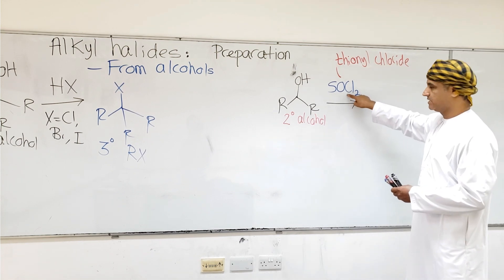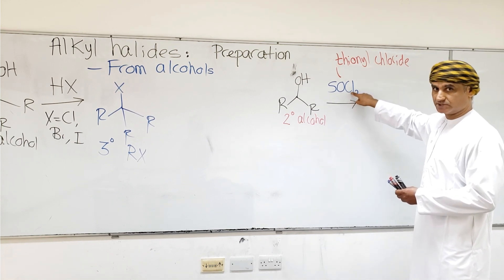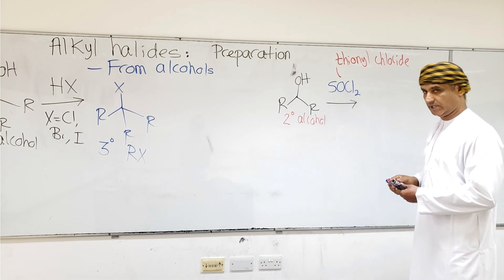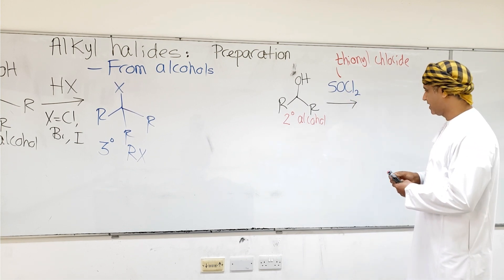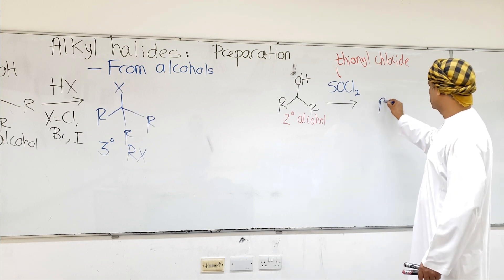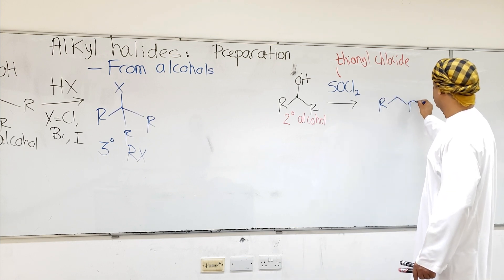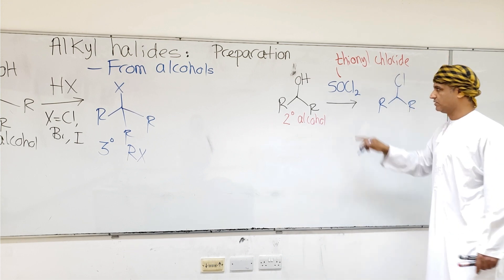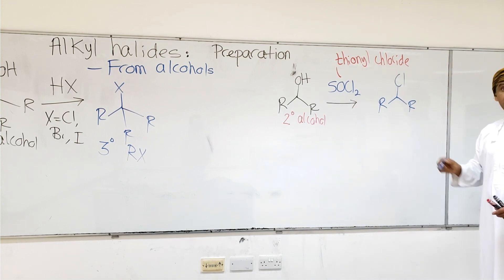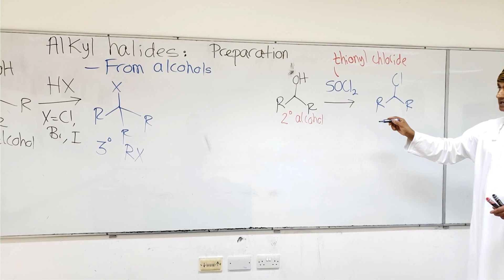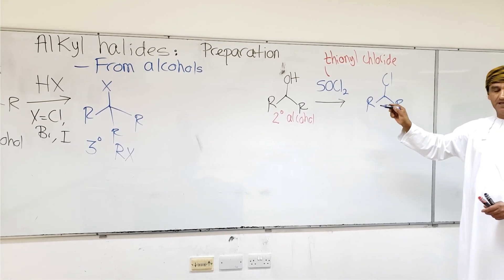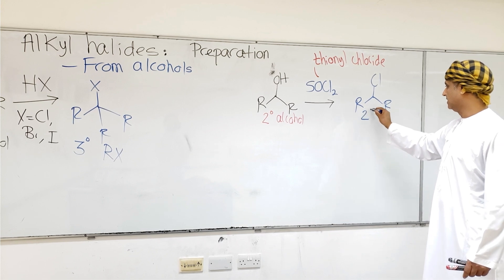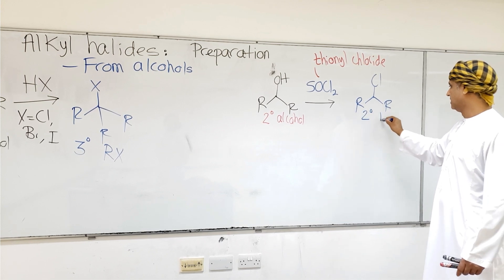SOCl2 is the source of Cl, and it is able to convert an alcohol into an alkyl chloride. So SOCl2 is used to convert a secondary alcohol into a secondary alkyl chloride.